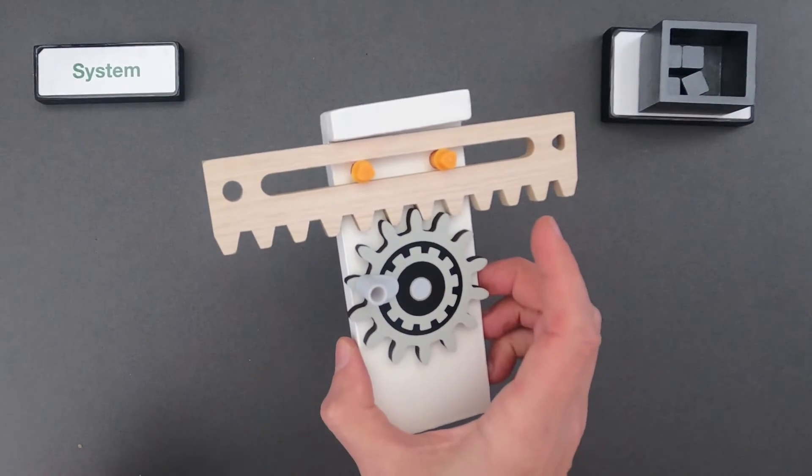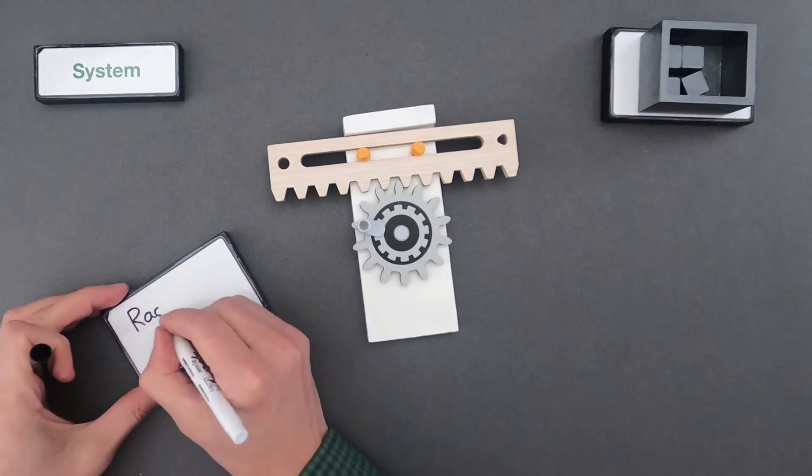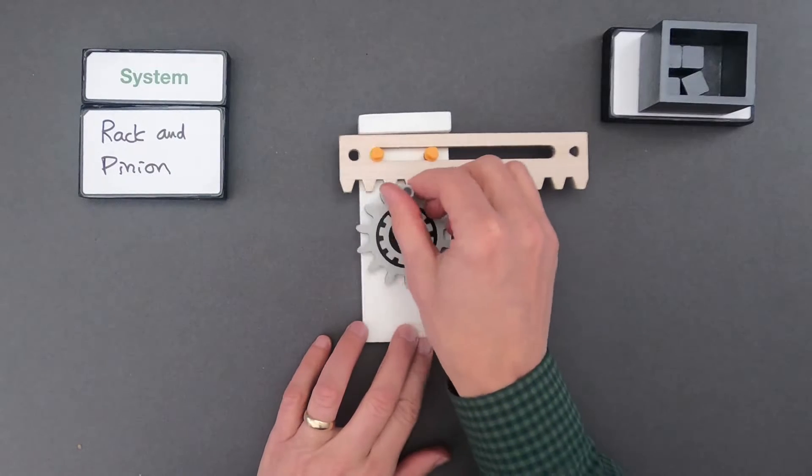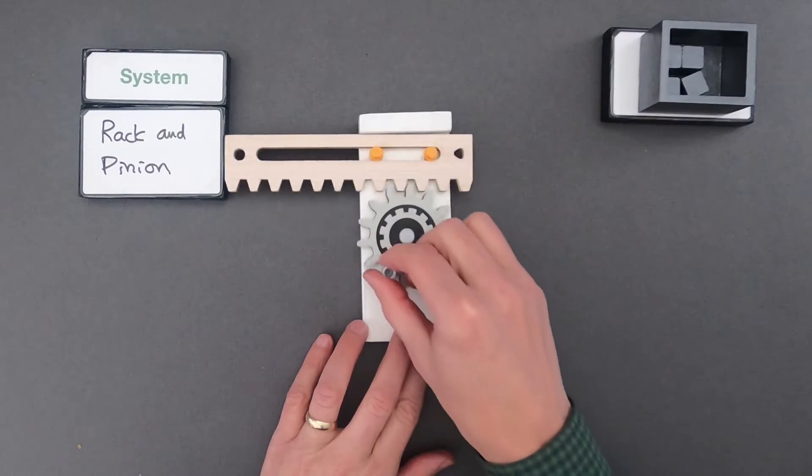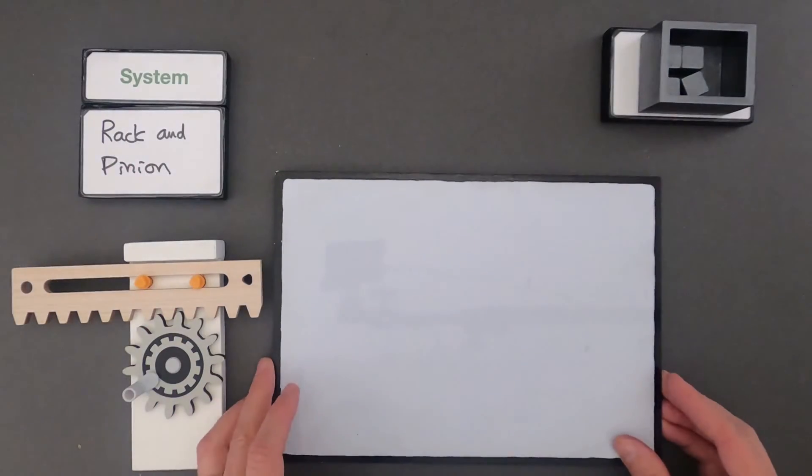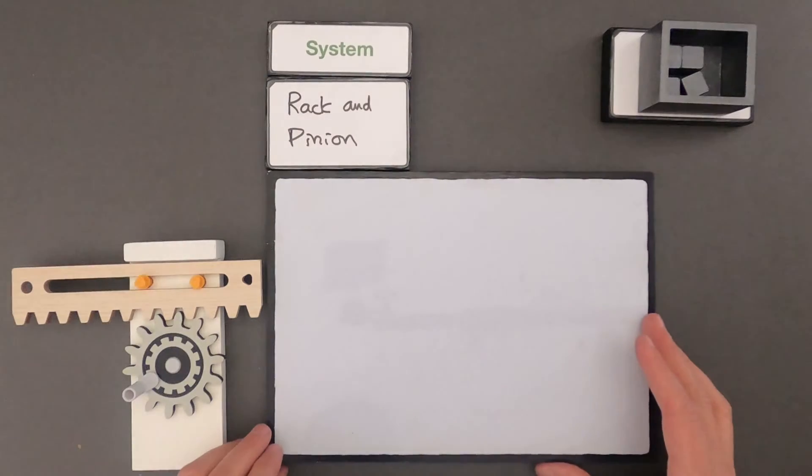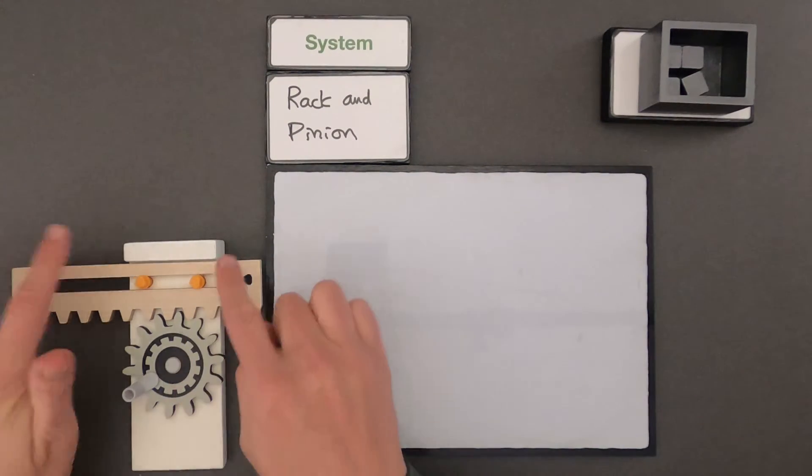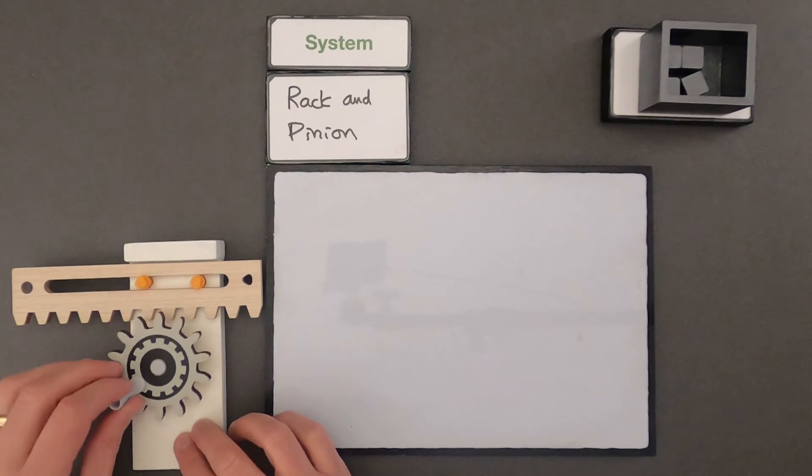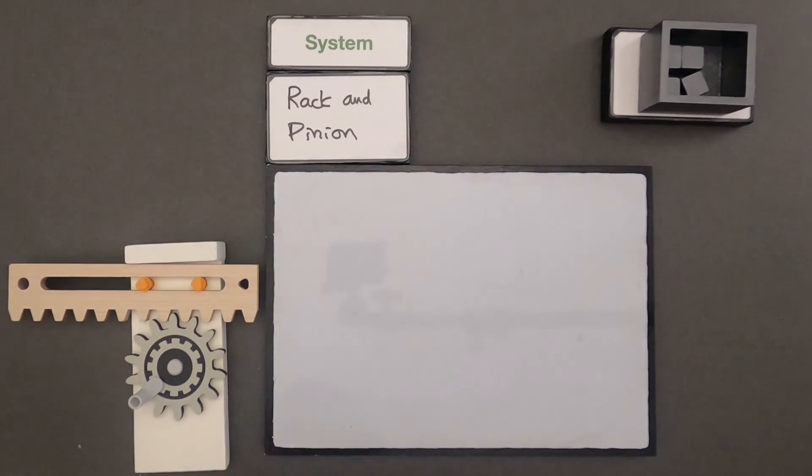The first thing we should do if we're ever looking at a system is to define the system. So the system we're going to investigate is this rack and pinion. I should play around with the system so I fully understand how it works. Let me put this over here. Now this big whiteboard represents this complex system. So this represents the rack and pinion. First thing I should look at is can I break this system into smaller parts. So for example I can pull this gear off and so that's going to be a part. So let me identify the three parts that I see in this rack and pinion.